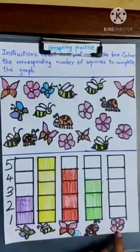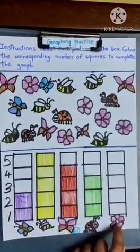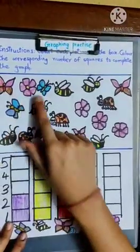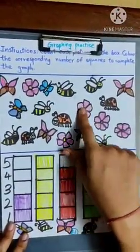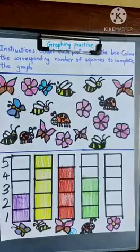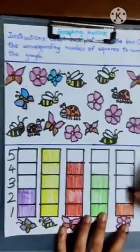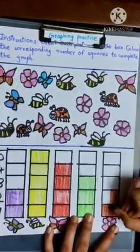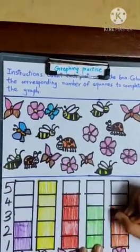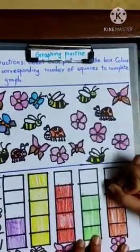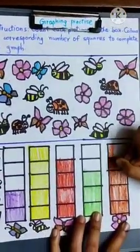And, at last, how many pink flowers are there? One, two, three, four, five. So, we are going to color five boxes. One, two, three, four, five.